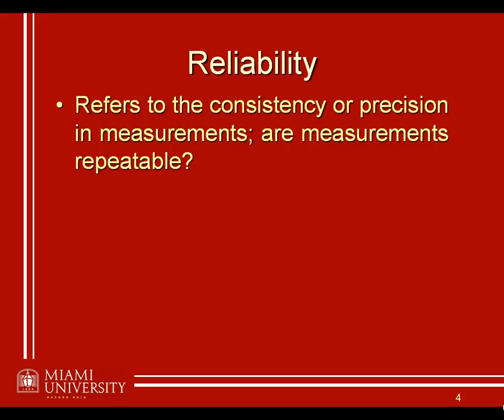If you step on the bathroom scale and it gives you a certain reading, then if you step off and step right back on it again, you hope that it's going to give you the same reading. If I step on the scale and it tells me 175 pounds, then three minutes later it tells me 180, then 190 — there's going to be something wrong with my bathroom scale. Those measurements aren't repeatable; they're not consistent. Reliability is really just another way to say that our measurements are going to be consistent — that if the construct we're investigating has the same underlying true value, we're going to get the same value every time we measure it.